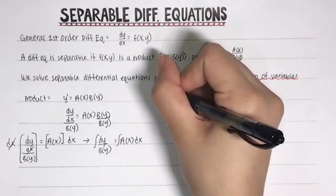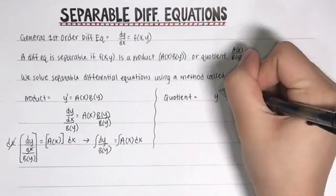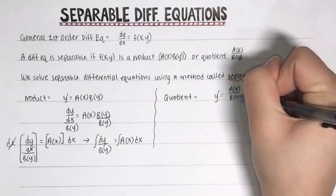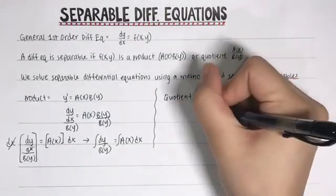Now let's do a quotient of functions. So y prime will equal a of x over b of y. We're just going to repeat the same steps we just did. So you should try to pause the video and do it by yourself, or you can just watch me do it.